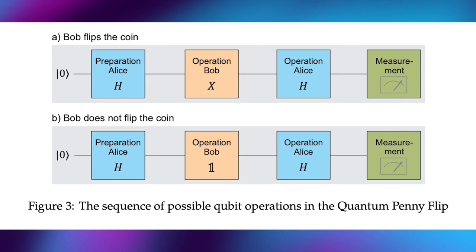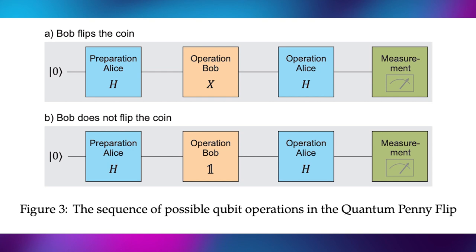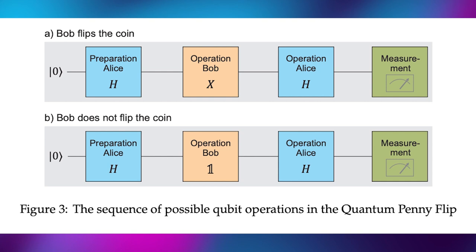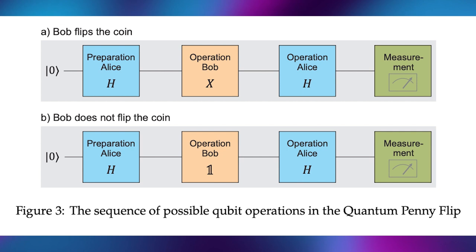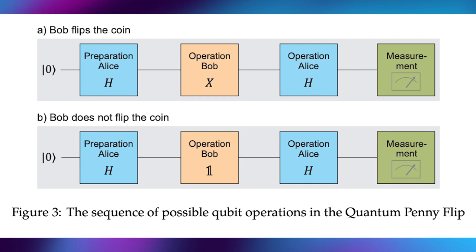So here's the sequence of possible qubit operations in this quantum penny flip game. So we start with an initial state. Here we have the zero state. Alice prepares the qubit with a Hadamard gate and applies that H gate to it. Then we see in these two, either Bob flips the coin or he does not flip the coin, which means he applies the identity gate when he doesn't flip it. That doesn't change. Then Alice does another operation and she applies the Hadamard gate. And after that we do the measurement. And this is how a lot of quantum circuits work. You first start with the preparation, then you do the operations and then you actually take the measurement.